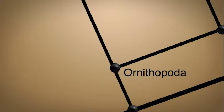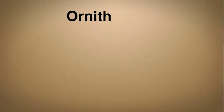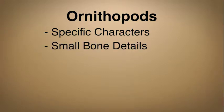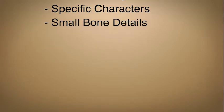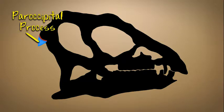Our next group is the Ornithopoda, which includes the dinosaur Heterodontosaurus. Ornithopods can be identified by several specific characters, and one must look carefully at small details of their bones in order to recognize these characters. First, one of the bones at the back of their skull has a crescent-shaped bump called the paroccipital process.